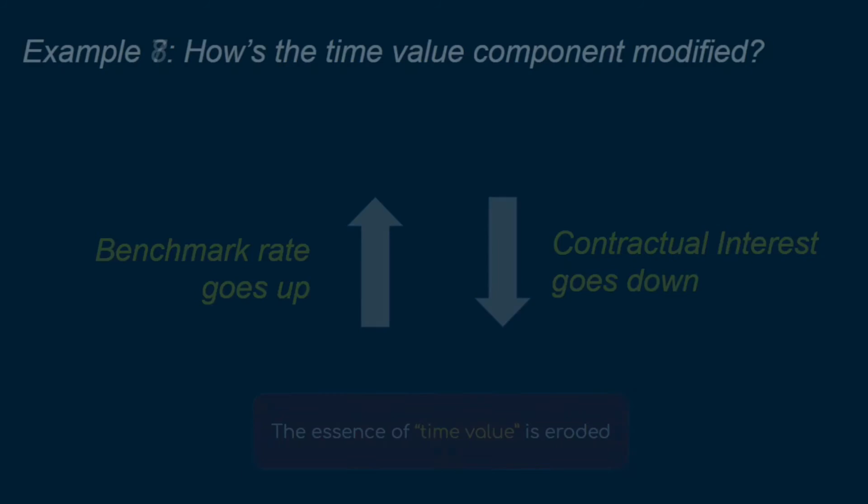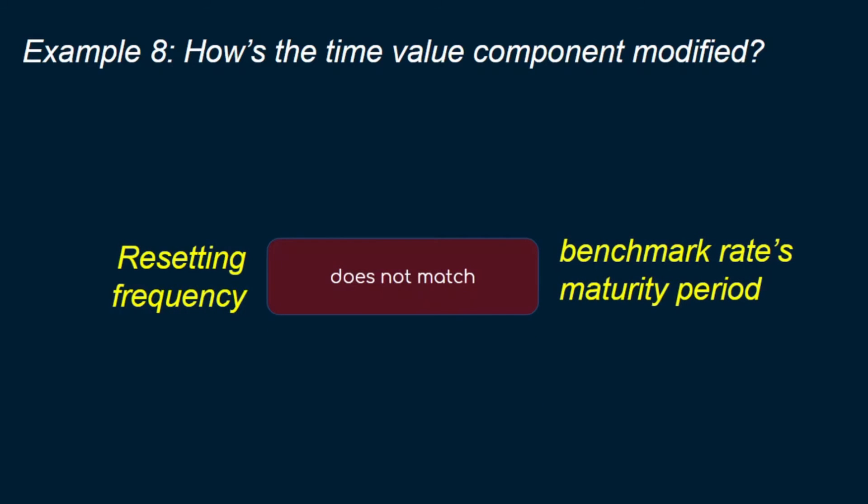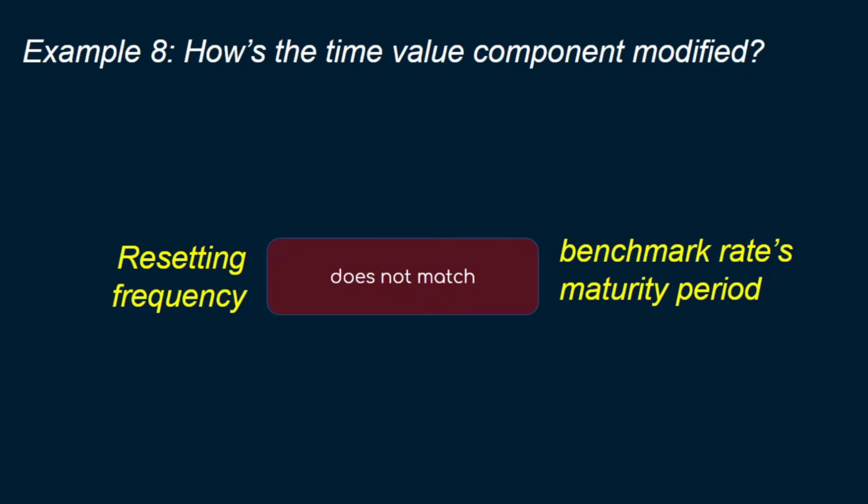Similarly, if a loan has an inversely floating interest rate — that is, the interest rate floats in the opposite direction of the benchmark rate — the time value of money is modified. Finally, the time value of money component is also modified if the floating interest is an average of multiple periods, or if a floating interest rate that resets every three months is linked to a six-month benchmark rate. If a floating interest rate resets every three months, it must reset to a three-monthly rate — not a six-monthly rate — to be considered unmodified. If the time value of money is modified, then naturally it's not solely payments of principal and interest.